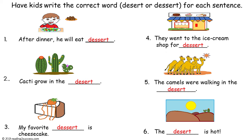This is a completed example. After dinner, he will eat dessert. Cacti grow in the desert. My favorite dessert is cheesecake. They went to the ice cream shop for dessert. The camels were walking in the desert. The desert is hot.